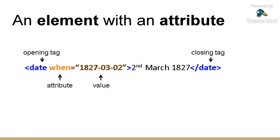Here we're using the ISO date: a four-digit year, two-digit month, and two-digit day — so 'date when equals 1827.03.02.' It's really important to notice how this is constructed: you have to have a space between the element name and the attribute, you need an equal sign, and you need double quotes around the value. Sometimes you might come across an empty element — something that has no content whatsoever. An empty element marks the point at which something happens in the text. The forward slash moves to the end of the element name, contracting the opening and closing tag into one.